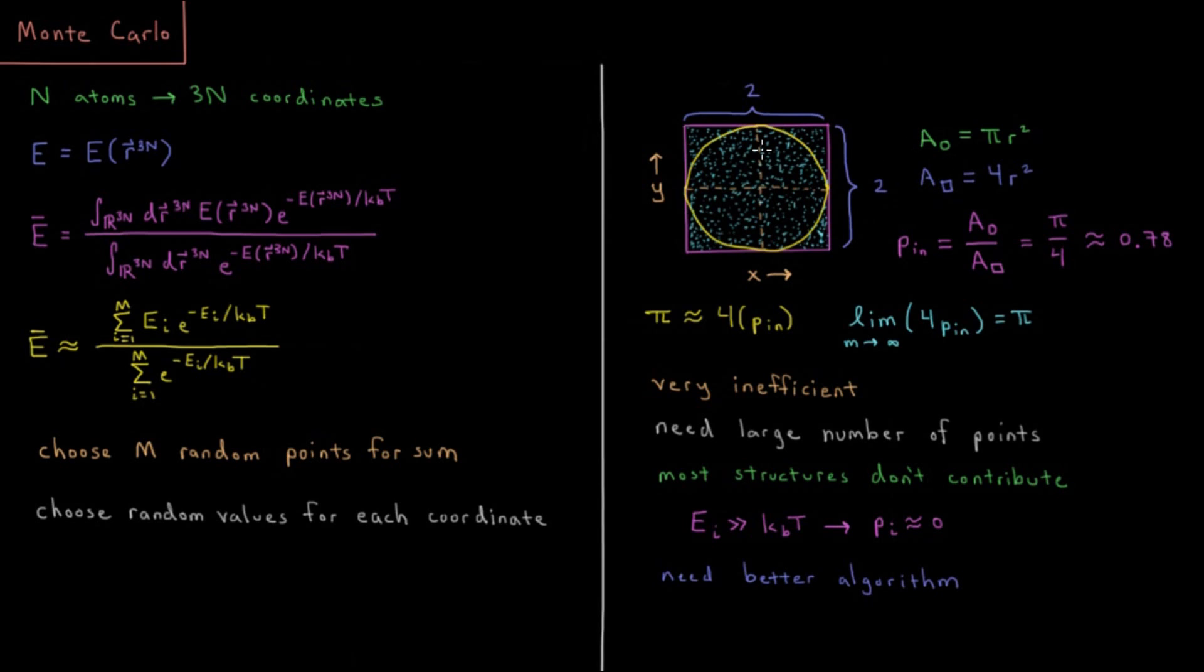And then the area of this circle, which is inscribed in it, is πR squared. So the ratio of the two areas here, if I randomly choose a point anywhere inside this square, the probability that it's inside the circle is the area of the circle divided by the area of the square. So the area of the circle divided by the area of the square is πR squared over 4R squared, or π over 4. So that's about 0.78.